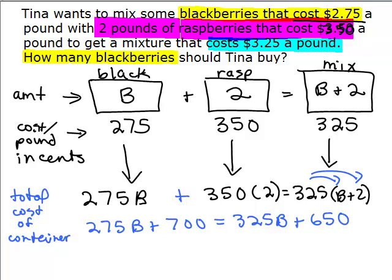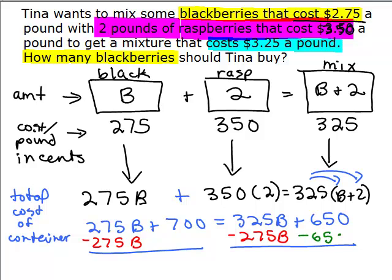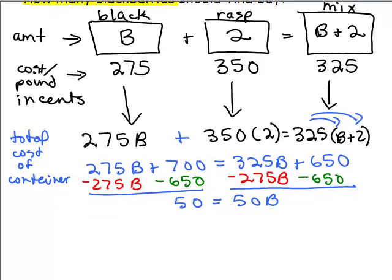Now we need to get the variables on one side, constants on the other. I don't like having negative numbers, so I'm going to put the variables on the right-hand side since 325 is bigger than 275. So I'm going to subtract 275B from both sides. And then we're going to also subtract 650 from both sides so that the constants are on the left side of the equation and the variables are on the right. So this gives me 50 equals 50B. Oh, isn't that nice? Divide both sides by 50, 1 is B or you could write that as B equals 1.